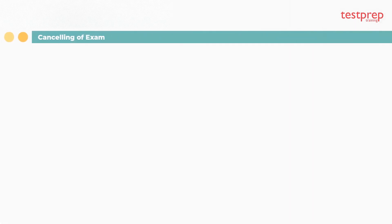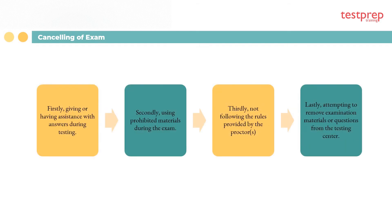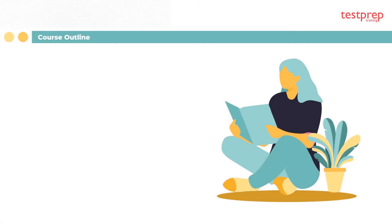Reasons for exam cancellation: First, giving or having assistance with answers during testing. Second, using prohibited materials during the exam. Third, not following the rules provided by the proctor. Fourth, attempting to remove examination materials or questions from the testing center.